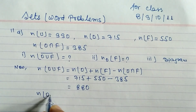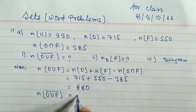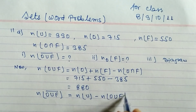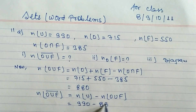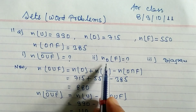Now finding (O union F) complement — those who were absent. The formula is: n(U) − n(O union F) = 990 − 880 = 110. So 110 civil servants were absent.